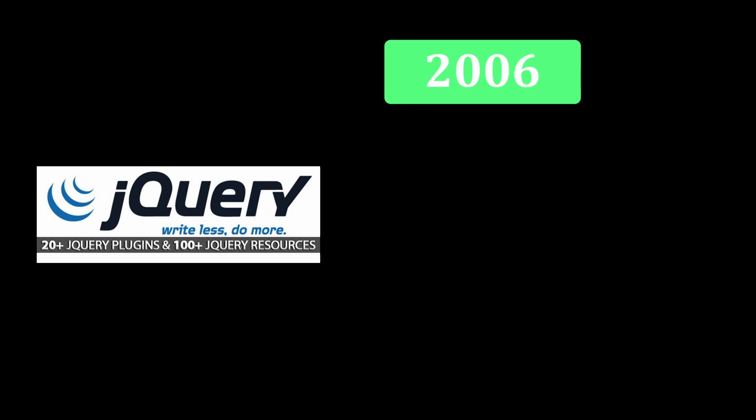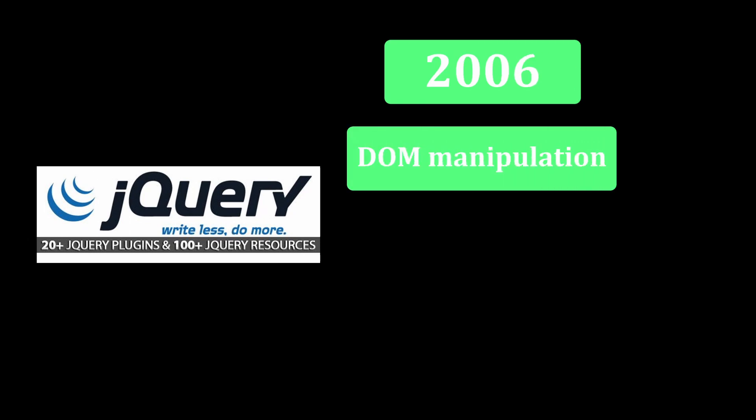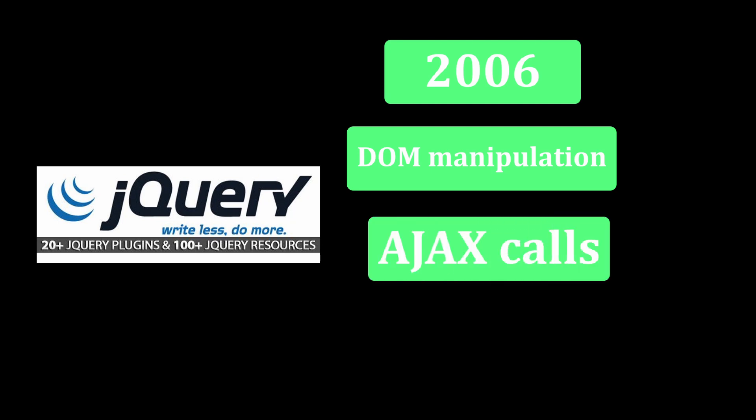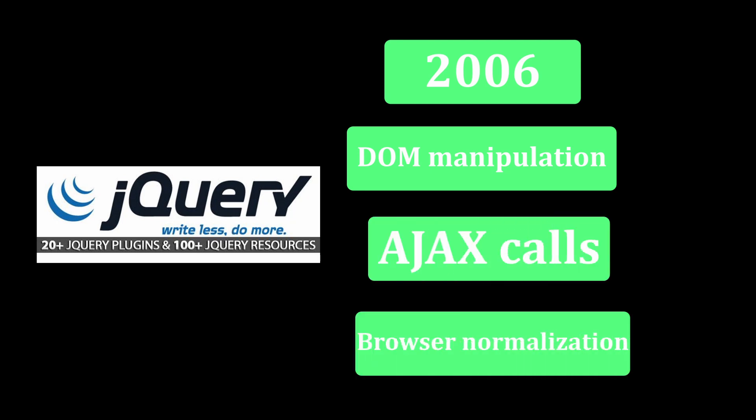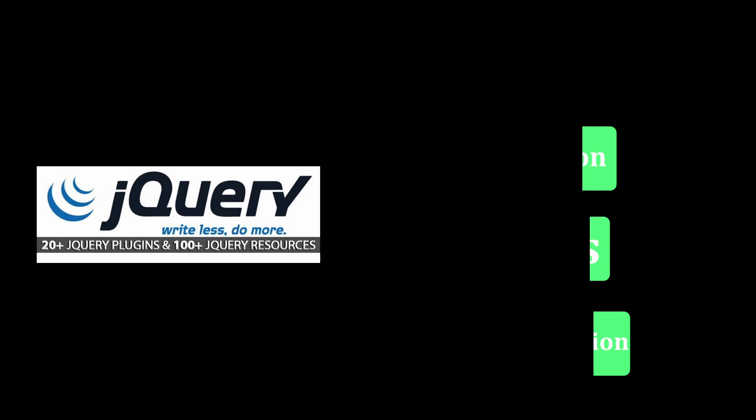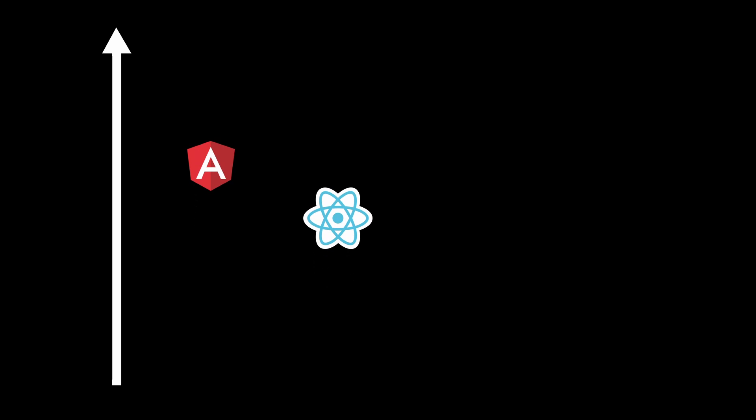jQuery was introduced in 2006 as a fantastic tool to manipulate and traverse the DOM. Suddenly, using JavaScript to interact with HTML became easier, and jQuery also introduced browser normalization, making all browsers behave the same way with the same jQuery code. That was the tipping point of client-side rendering, and soon enough, with the evolution of client-side libraries like Backbone, Angular, and React, client-side rendering became easier and more powerful, so it made less and less sense to render content on the server.